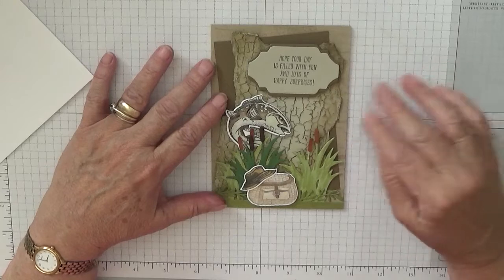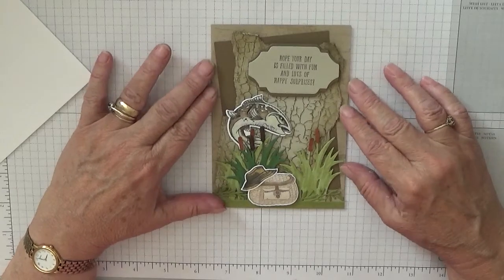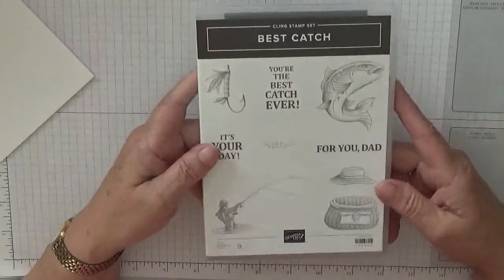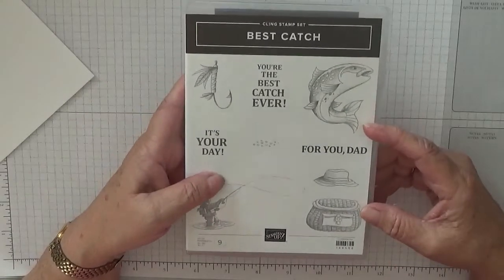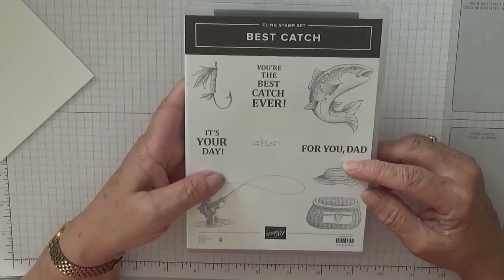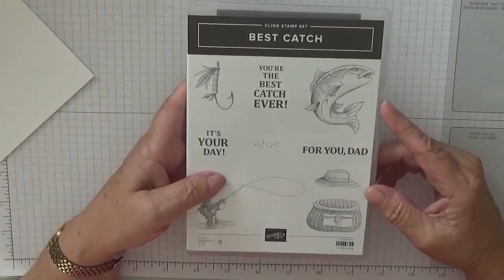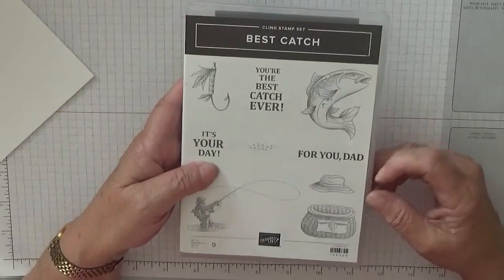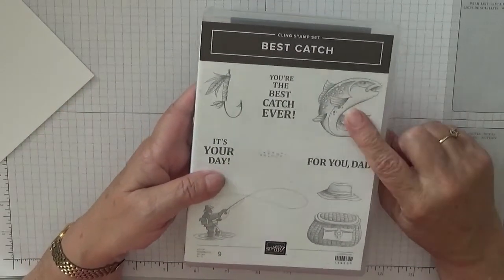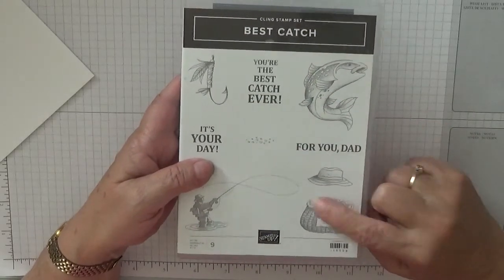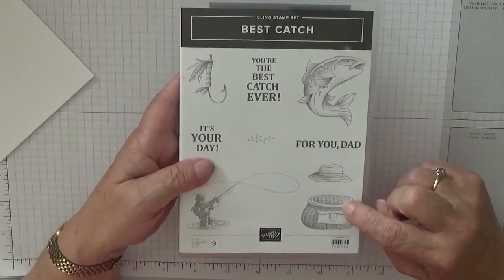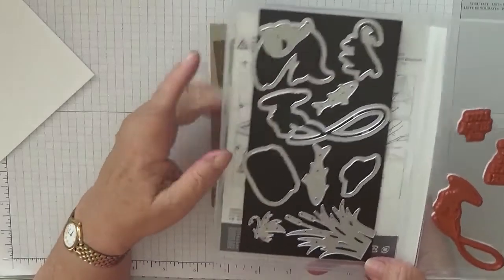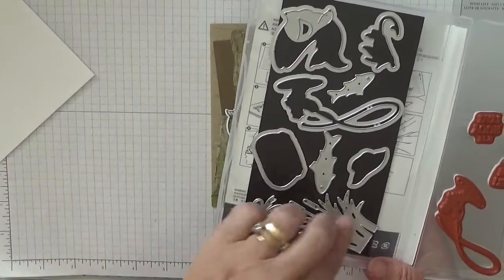To make this card I have borrowed my sister's stamp set as I don't have this. She actually let me use this to make the male family cards. I put it on the shelf, forgot about it, so I never made one. So I've now got to use it. Out of this we're going to use the fish, the hat, and the bag. Out of the dies we're using the fish, the bag, the hat, plus the reeds.